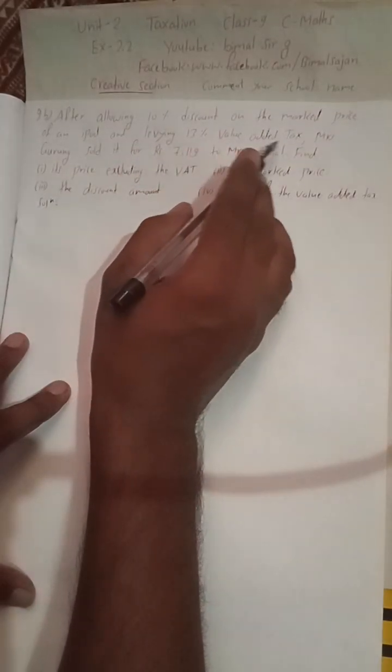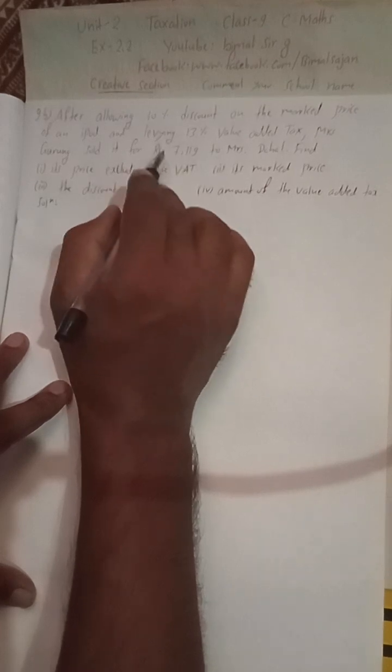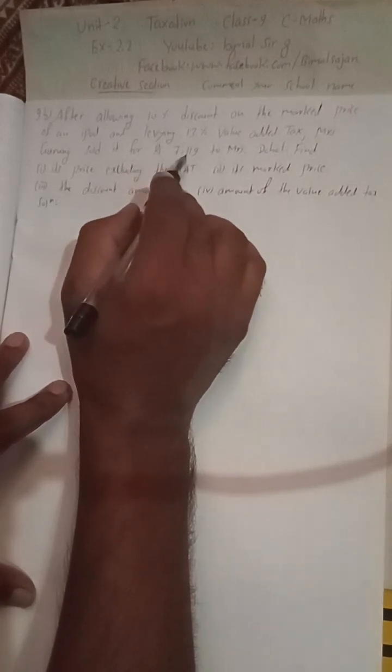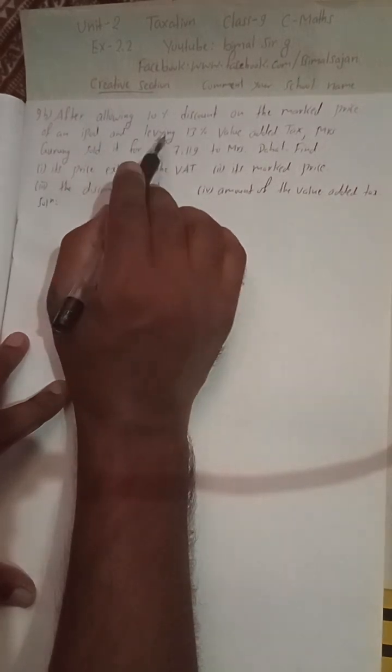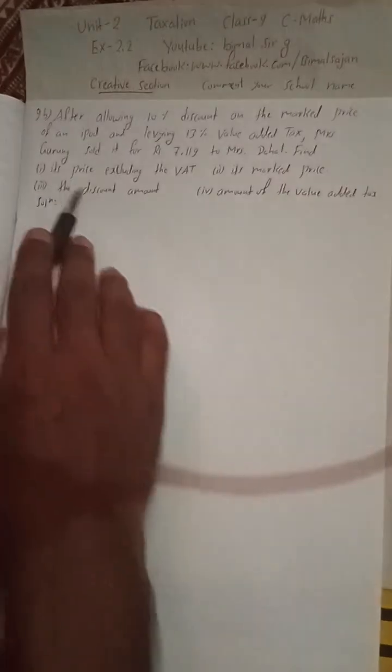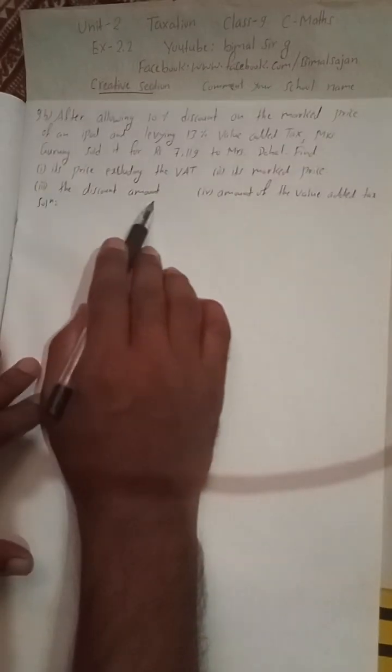After allowing 10 percent discount on the marked price of an iPod and leaving 13 percent value added tax, Mrs. Gurum sold it for this much. This is the price including discount and 13 percent value added tax. Find the price excluding the VAT, its marked price, the discount amount, and amount of the value added tax.